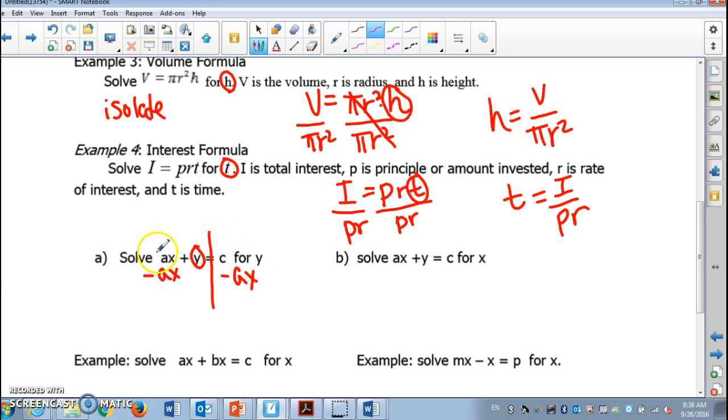AX and AX cancels out. Y equals... can I simplify this anymore? C minus AX? We can't, so we just write C minus AX. What we're doing is when we are asked to solve for a variable, we're trying to isolate that variable by doing inverse operations.